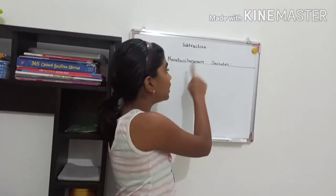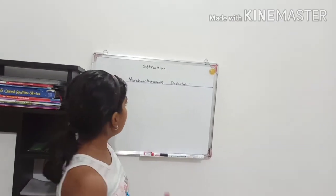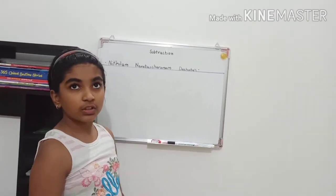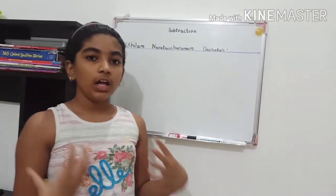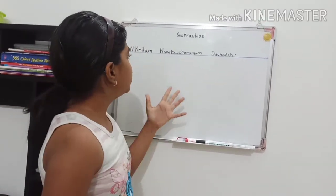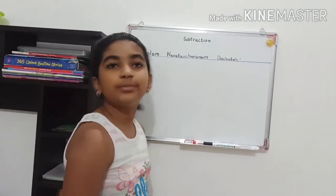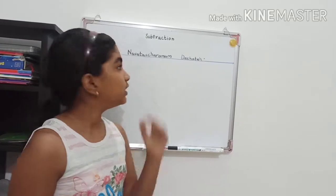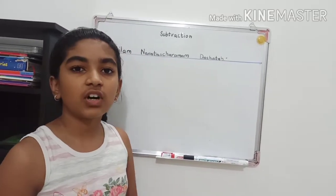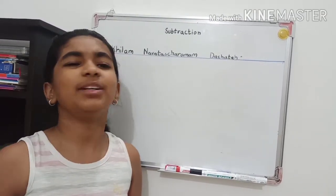The method we are going to be using is called Nikhilam Navadashcharam Dashitaha, and we are going to be learning subtraction. The meaning of Nikhilam Navadashcharam Dashitaha is 'all from the nine and the last from the ten.' I'll tell you what it means later. This sutra is used for subtraction, multiplication, and division.